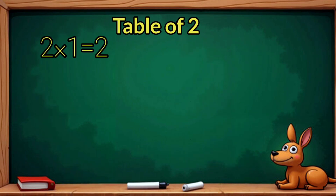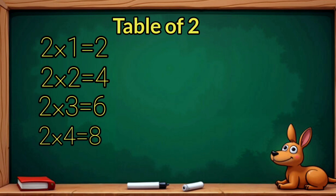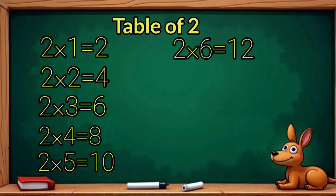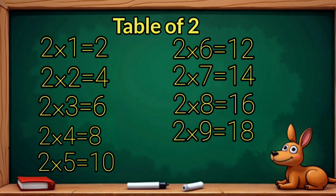2 1s are 2, 2 2s are 4, 2 3s are 6, 2 4s are 8, 2 5s are 10, 2 6s are 12, 2 7s are 14, two eights are sixteen, two nines are eighteen, two tens are twenty.